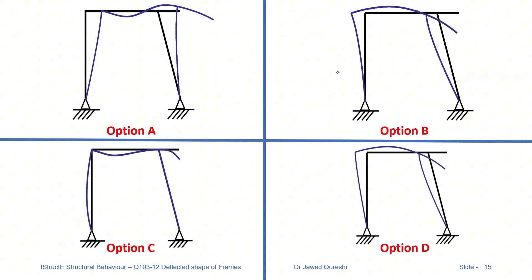Let us assess the first option. When we apply load at the end, the frame is going to sway towards the weaker side. When we apply load at the tip, in my view this is going to turn the entire beam into tension at top, and here we have double curvature in the beam. I don't understand this logic, so I will say this option is incorrect. Also, when we have tension at the top in the beam, this is going to sway the beam towards left rather than right, so this option is definitely incorrect.